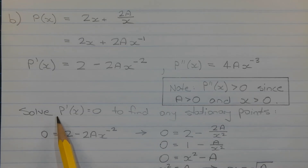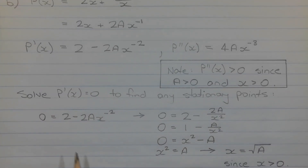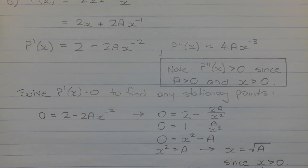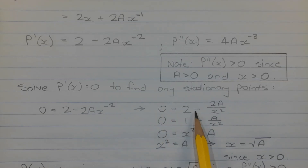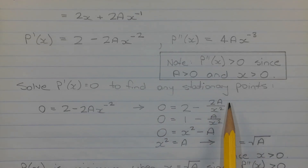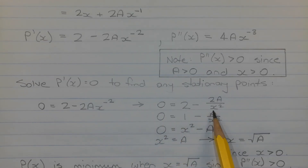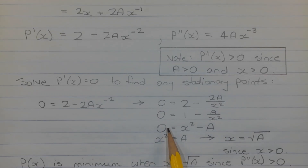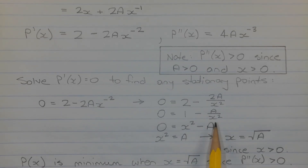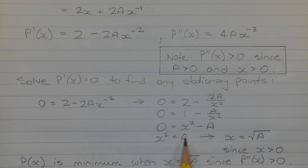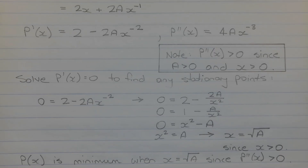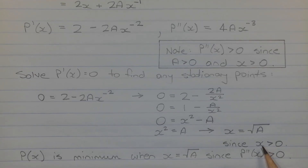To find stationary points, solve p dash of x equals 0: 0 equals 2 minus 2a times x to the negative 2, or 0 equals 2 minus 2a over x squared. Dividing all terms by 2: 0 equals 1 minus a over x squared. Multiplying all terms by x squared: 0 equals x squared minus a. Rearranging: x squared equals a. Taking the positive square root, since x is positive: x equals the square root of a.